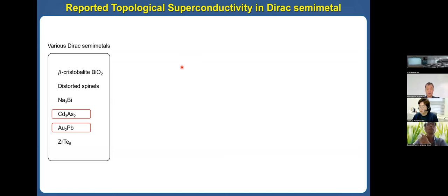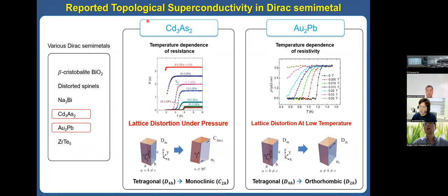As I discussed before, many Dirac semimetals have been reported in various materials. Among them, cadmium arsenide and Au₂Pb are known to show superconductivity. For cadmium arsenide, this is the temperature-dependent resistance — above 8.5 GPa it shows superconductivity, and the critical temperature is approximately 2 K.